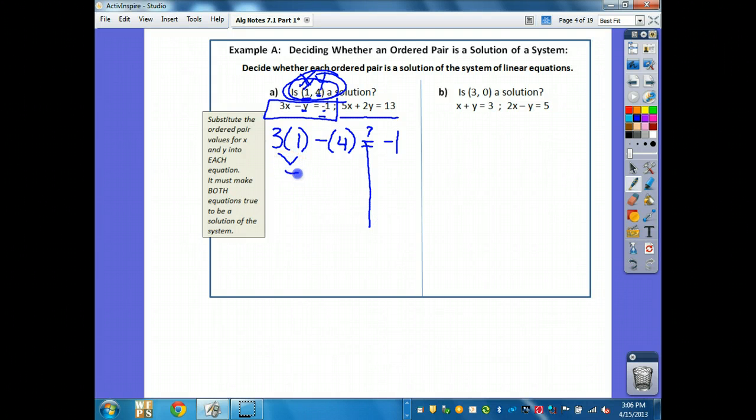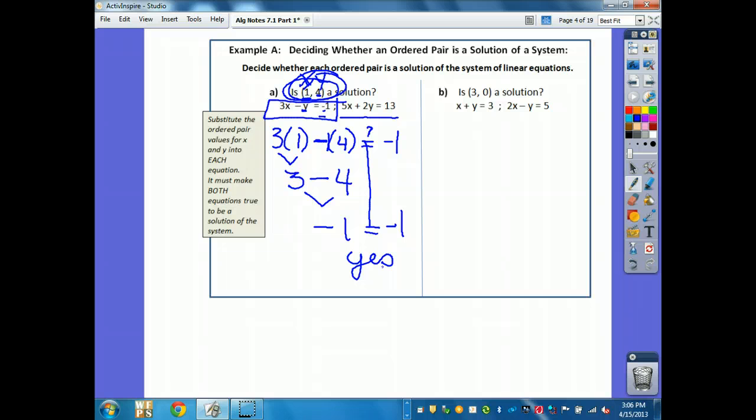We're doing this one first. Does that one work? Then you show your work. 3 times 1 is 3. And negative, and they're assumed 1 times 4 turns into negative 4. 3 minus 4 is negative 1. Does that equal your negative 1 on this side? Yes. That one works, but that doesn't mean that that's the answer. We don't know that if that's where it crosses yet. It's looking good, but we have to prove it now in the second line.